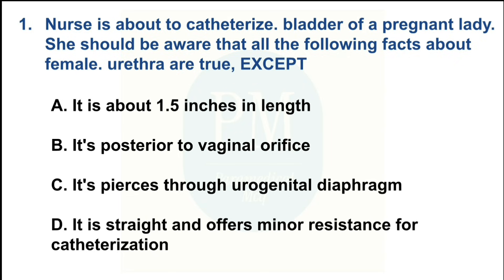A nurse is about to catheterize the bladder of a pregnant lady. She should be aware that all the following facts about the female urethra are true except: Option A — it is about 1.5 inches in length; Option B — it is posterior to the vaginal orifice; Option C — it pierces through the urogenital diaphragm; Option D — it is straight and offers minor resistance for catheterization. The correct option is Option B: it is posterior to the vaginal orifice.